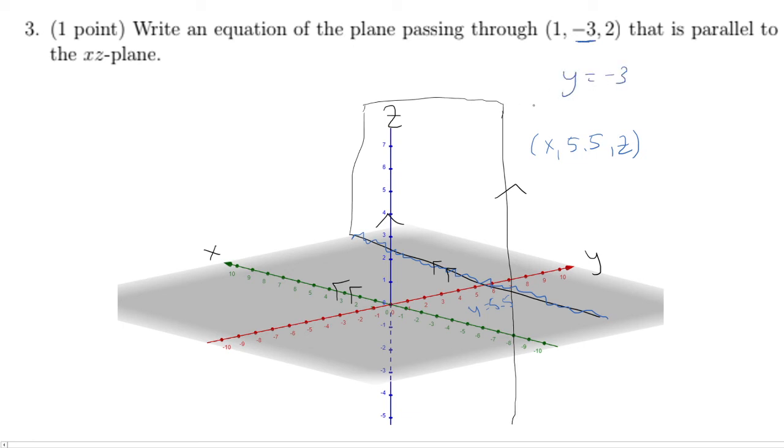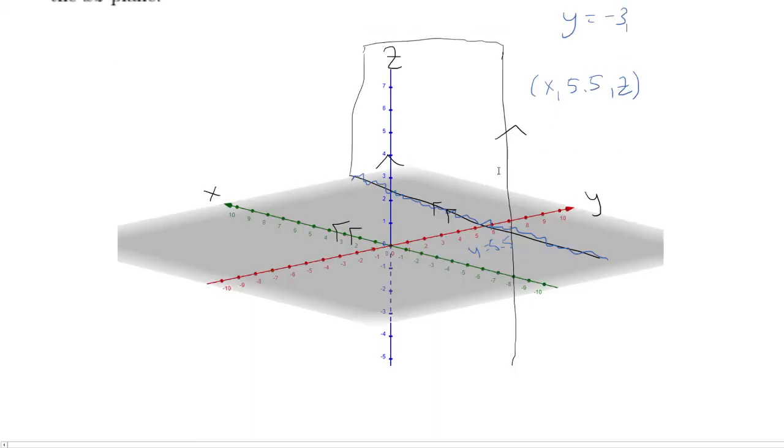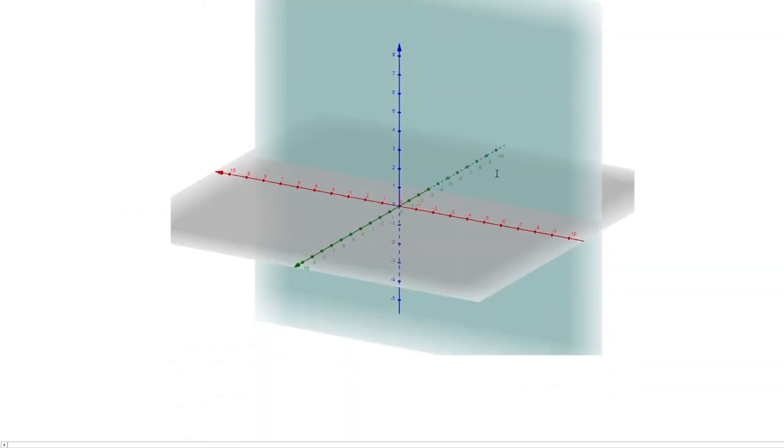That's going to be our equation. And if we look at the actual picture, it goes through the negative 3 here. So, you know, this whole line is negative 3.